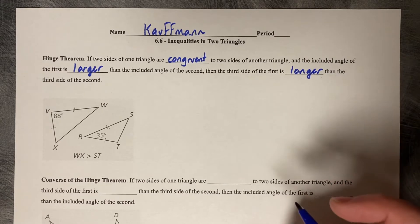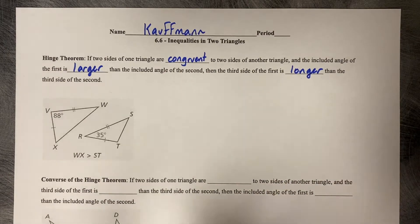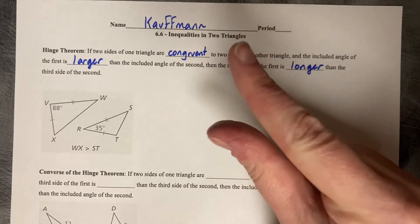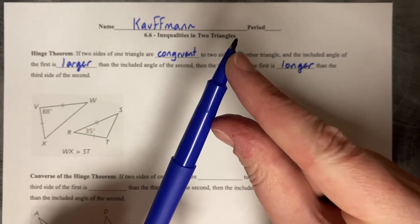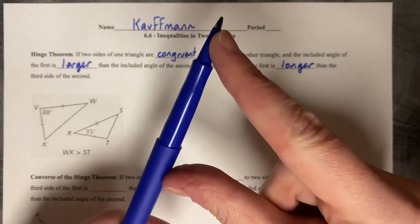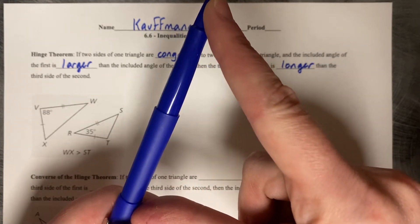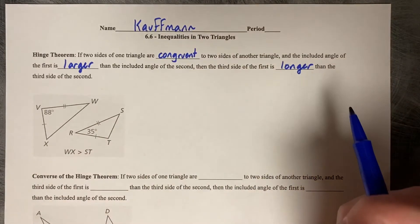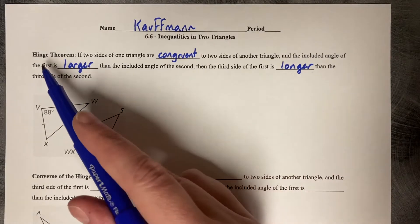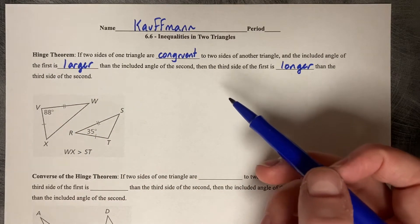Think about a door opening and closing. This side length between my two fingers is kind of short while my fingers are closed, but as I open my fingers and increase the angle between my first finger and my thumb, the side length gets longer. That's what the Hinge Theorem is demonstrating, which is why it's called the Hinge Theorem — think about a door.